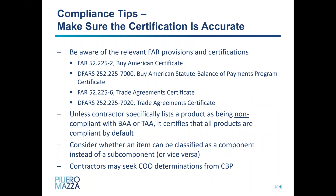Unless you specifically list the products that are not compliant, you're certifying that all products are compliant — so make sure your certification is accurate. Review the products you're offering on schedule contracts and make sure that they remain compliant. Keep in mind that certifications are ongoing: if you have a change with some of your sources, notify the government prior to making that change to allow them to determine how they want to proceed. You can also seek country of origin determinations from customs — they issue advisory rulings that are non-binding and final determinations that are binding. If you don't agree with a final determination, you can seek judicial review with the Court of International Trade.